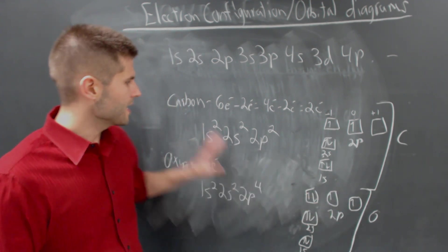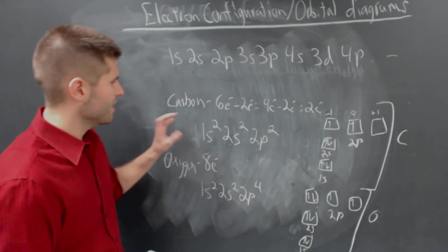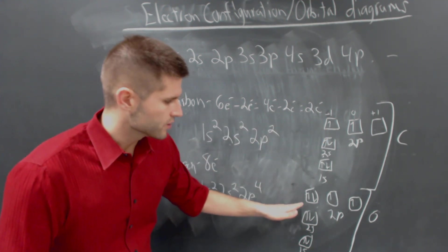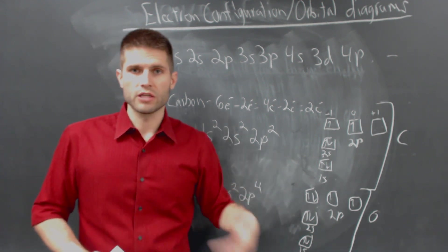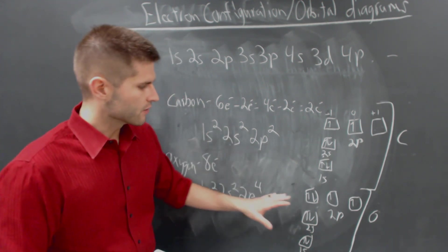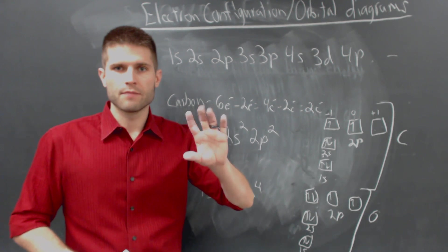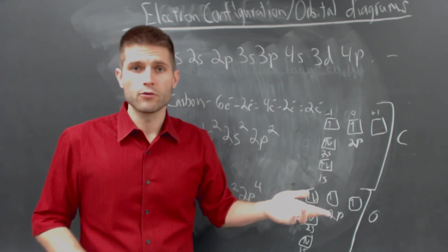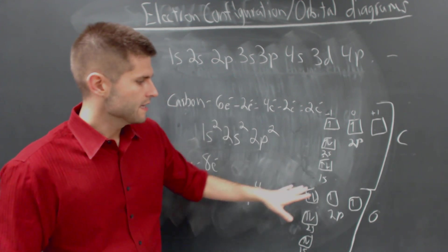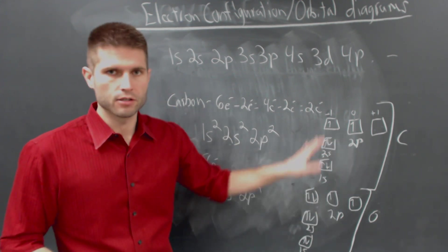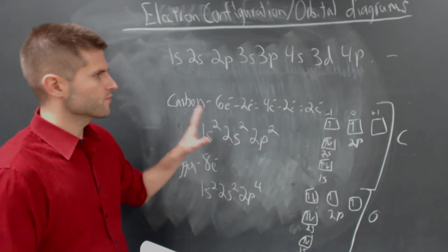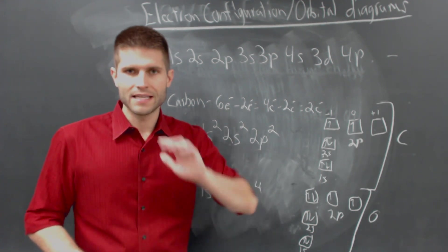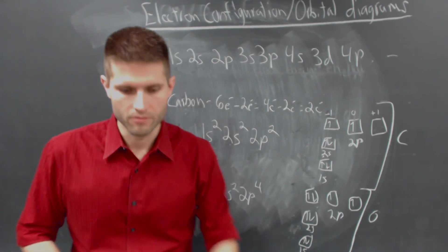We'll do a lot of these problems in class — electron configurations and orbital diagrams. And really, with these orbital diagrams, it will eventually tell us if something is able to be magnetized or influenced by a magnetic field, based on how the orbital diagrams look. So we'll be dealing with this for a couple of days and then move on. Have a great night — I will see you all in class tomorrow.